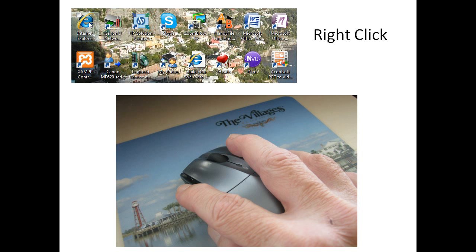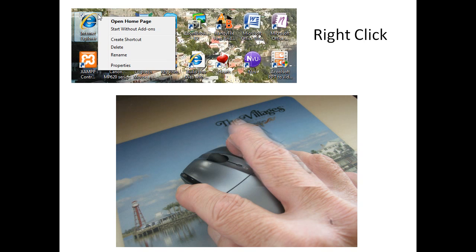The right-click — there's a difference. When you right-click on the highlighted Internet Explorer icon, a little window opens up which gives you information about open homepage, start with add-ons, and so forth. We won't go through all of that, but basically what right-click does is it highlights items and then identifies other options you have associated with that icon.